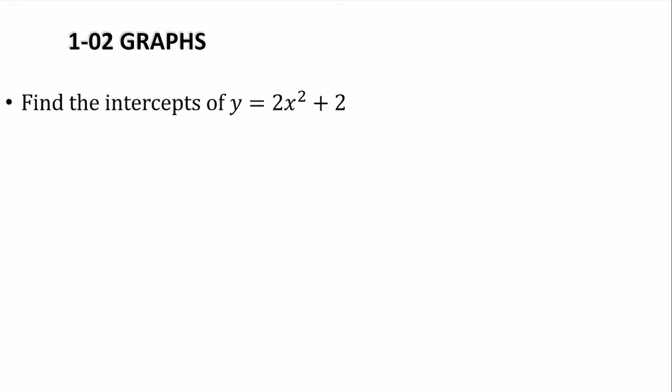So let's find the intercepts of this. Well, let's start with the x-intercept. So we'll let the y equal 0 and we'll solve for x. So we'll subtract 2, divide by 2, and then square root. Remember when you're solving an equation, you square root both sides, you have to put the plus and minus. Now, square root of negative 1 is not real. So that means there are no real x-intercepts.